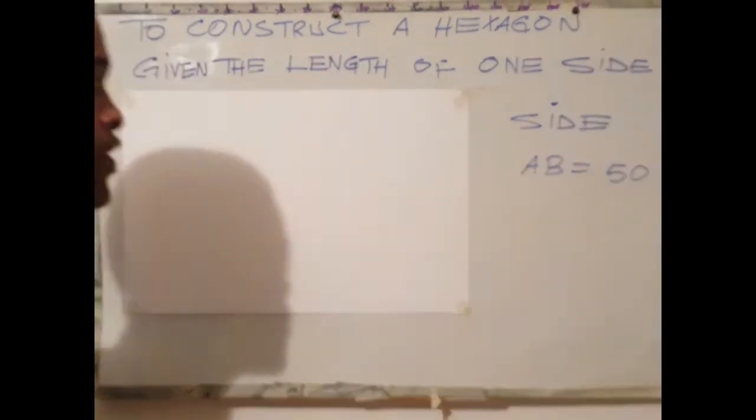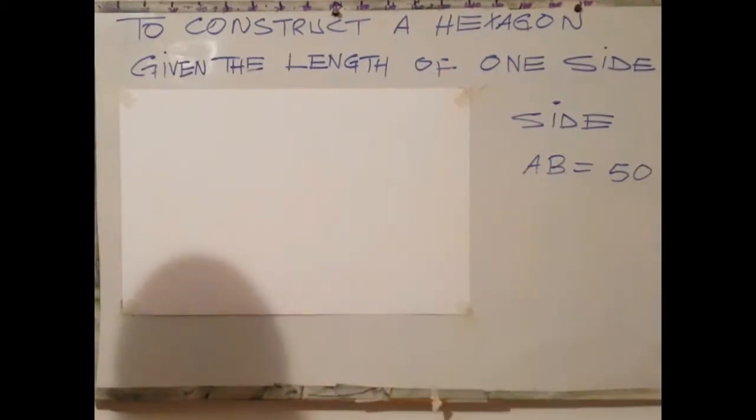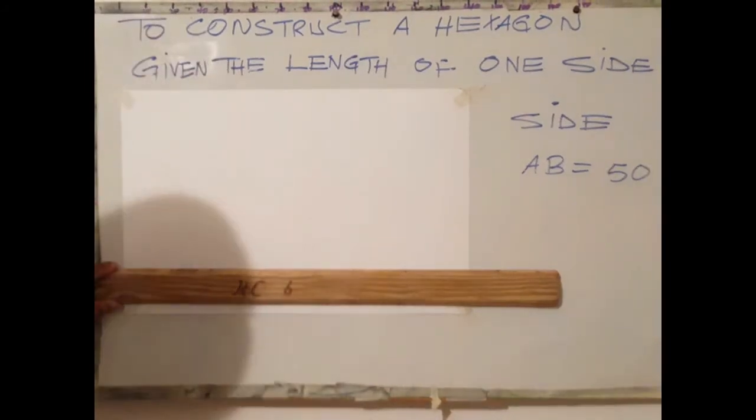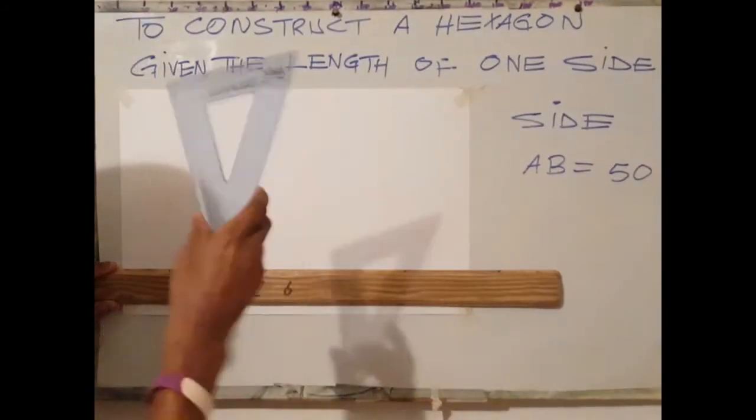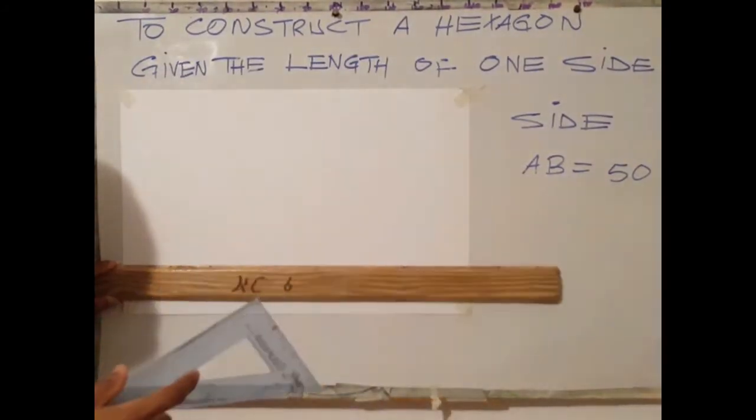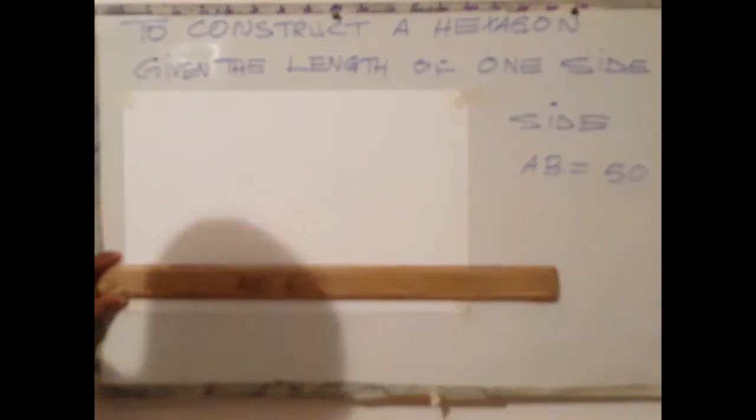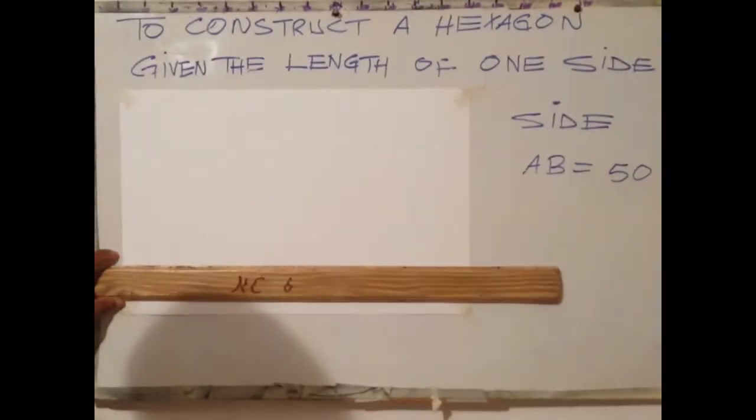Let's move on to the third method for constructing a hexagon when given the length of one side. For this method we will be using a 60-30 set square to draw the hexagon. So the first step is to draw a horizontal line.